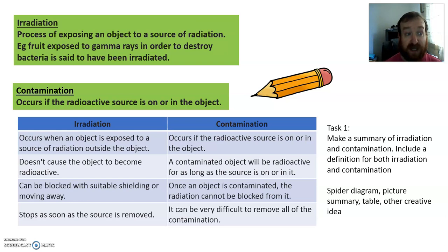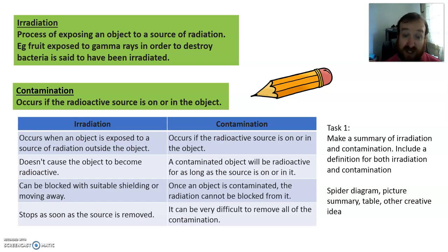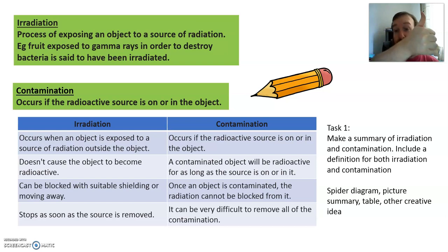Your first task, boys and girls, is to make a summary of contamination and irradiation. You need to have a definition for both. You can use my definition, change it, shorten it, summarize it as a spider diagram or a picture summary — a little picture showing the rock and a fish would work quite well. Or some other creative way to summarize that information. That's your first task — it should take no more than 10 minutes. So pause the video here and make a summary of that information.